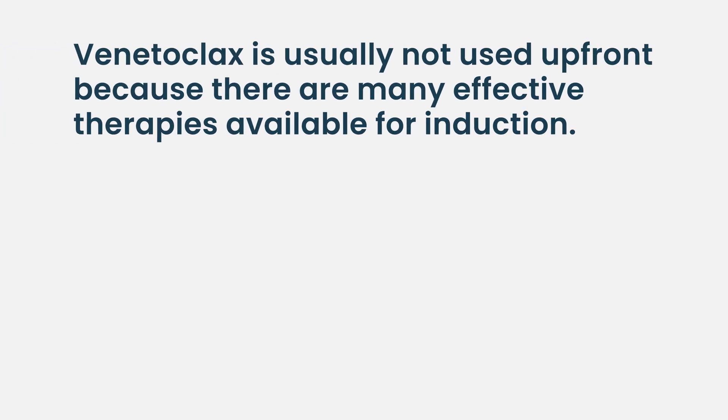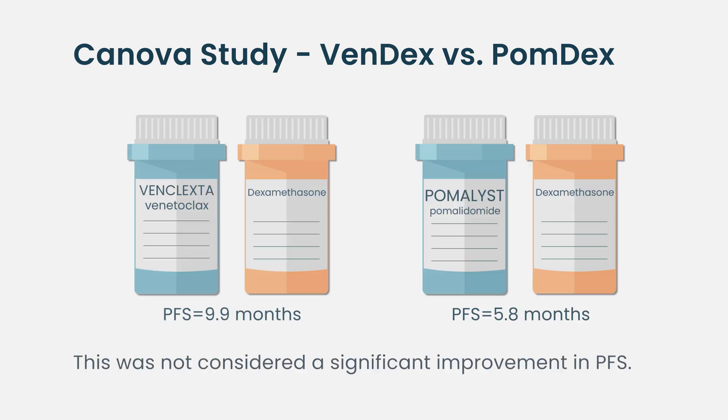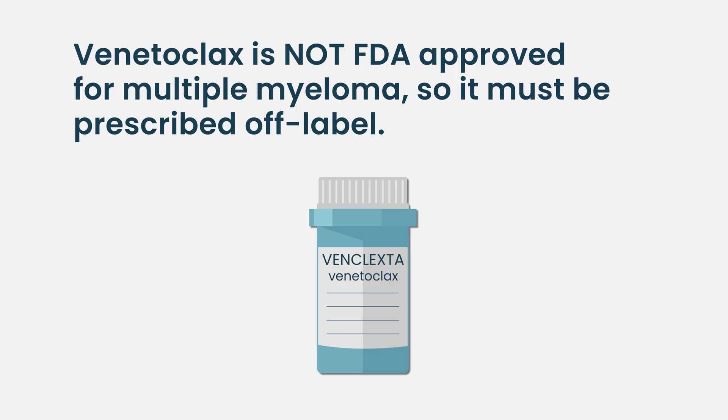That study showed that venetoclax really should be used for patients who specifically have translocation 11;14. Studies are now being done in just that group. It's a drug myeloma doctors really like using, usually in combination, typically as a second, third, or fourth line therapy — not upfront, since other therapies also work for these patients. Proteasome inhibitors, IMiDs, and other treatments still work too. A recent study showed it didn't beat pomalidomide and dexamethasone, so it hasn't received official approval yet, but we can still access the drug for patients who can benefit.